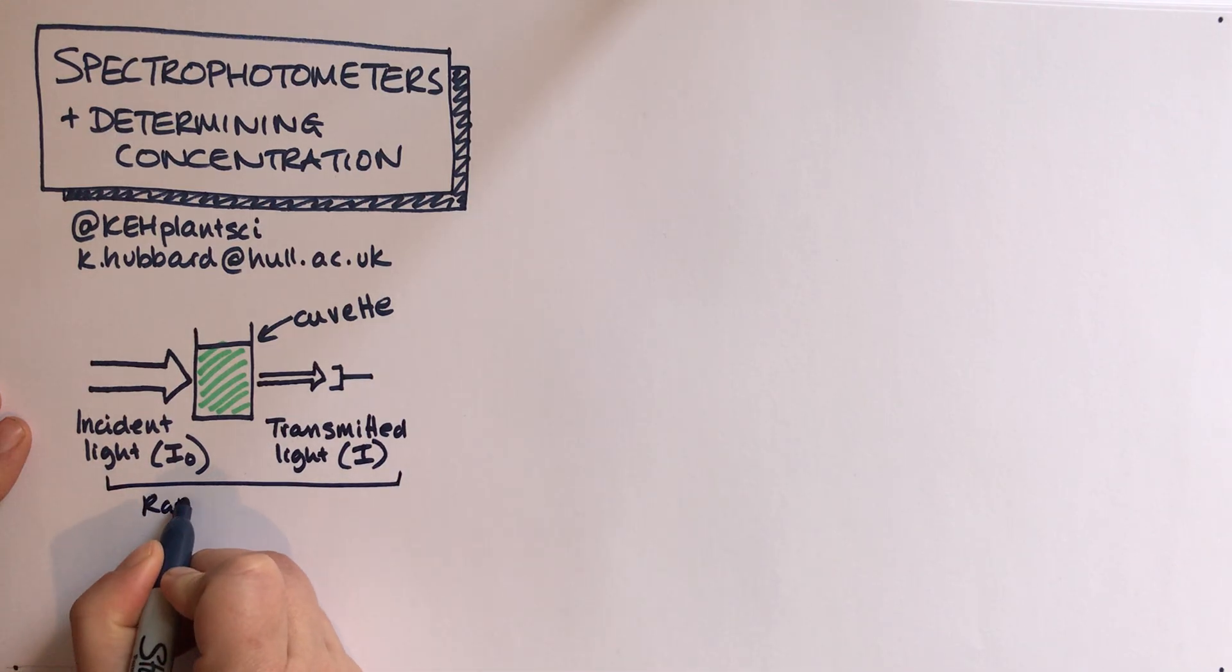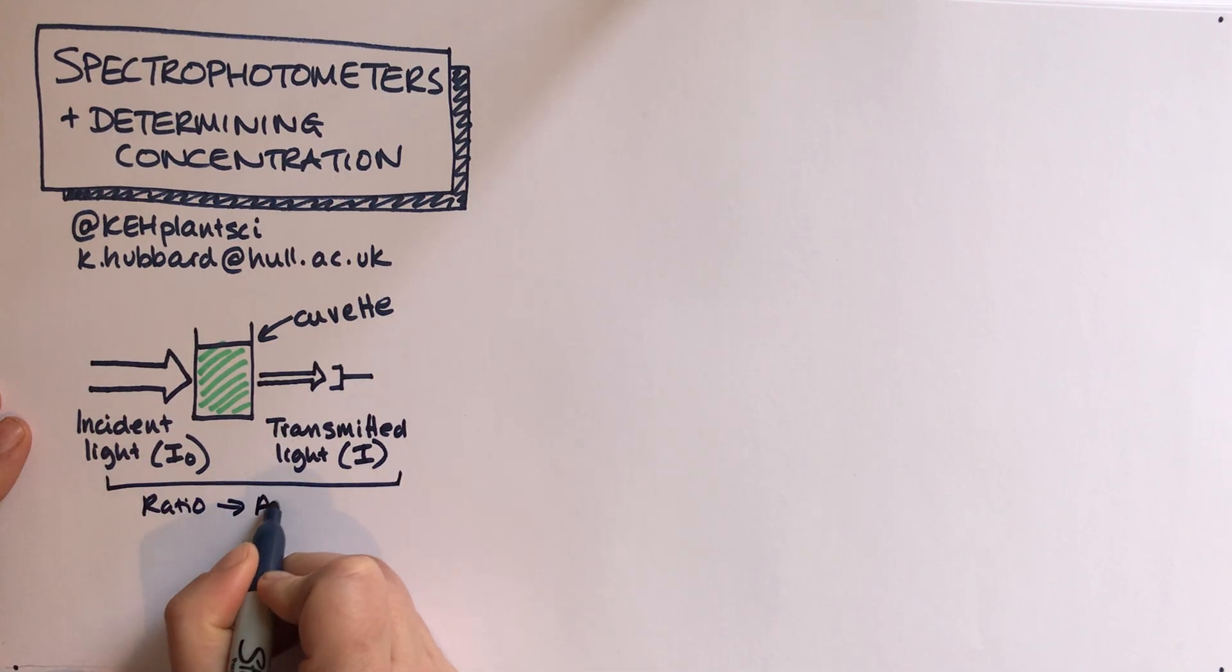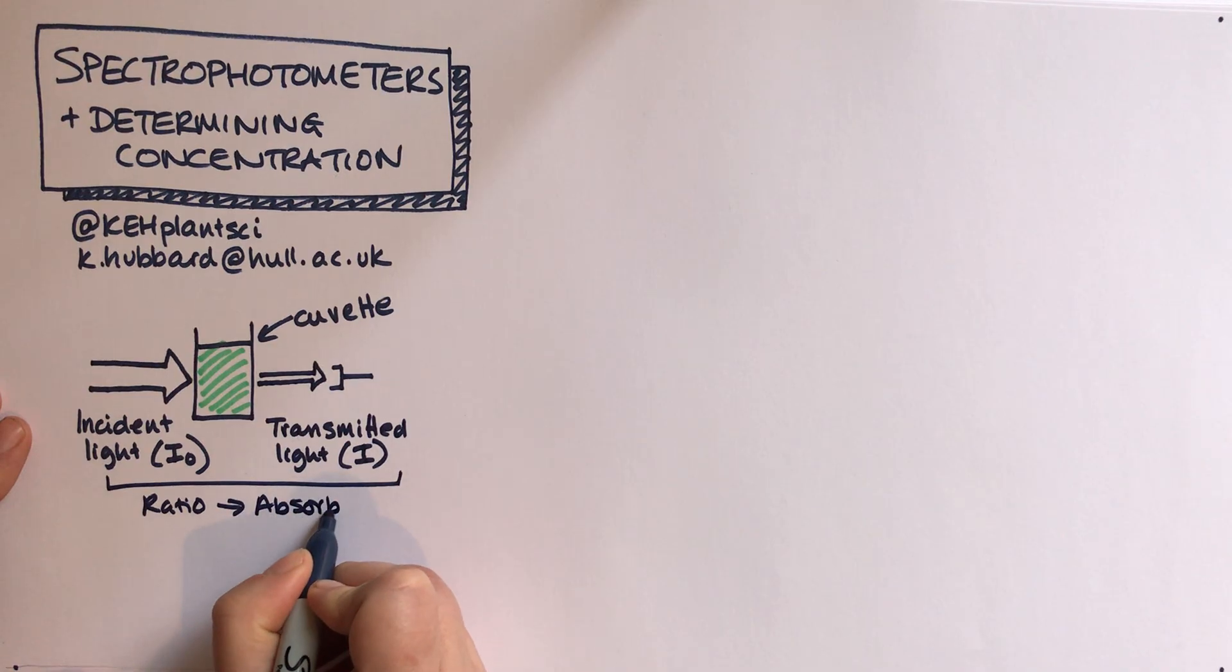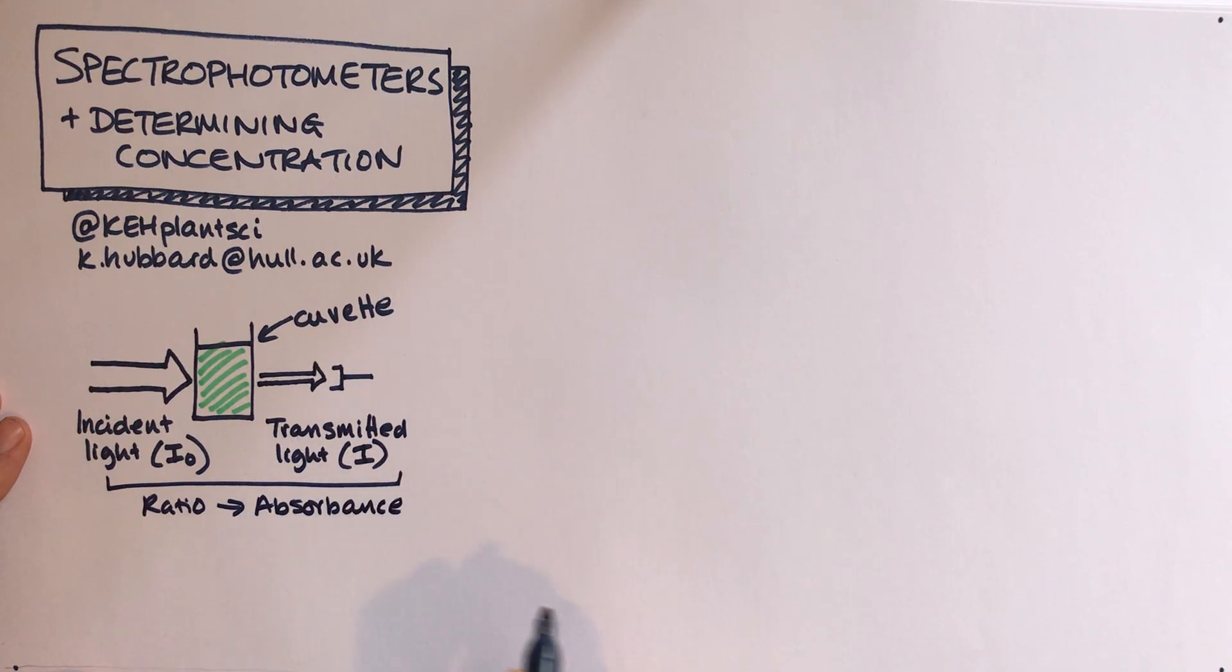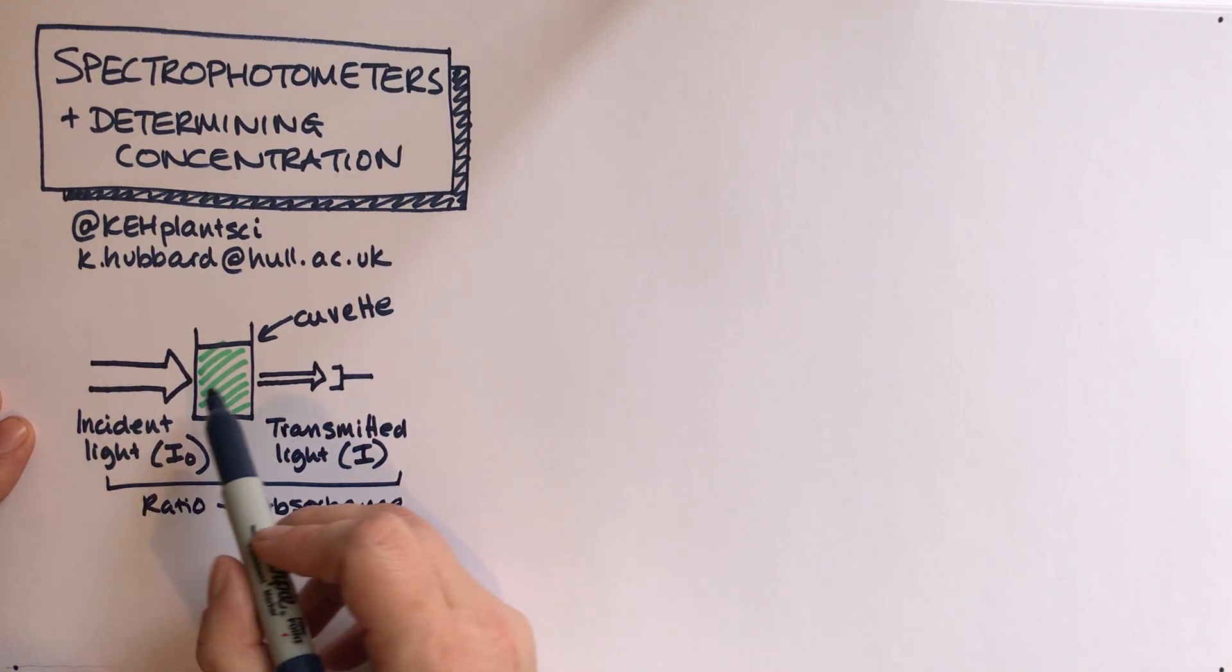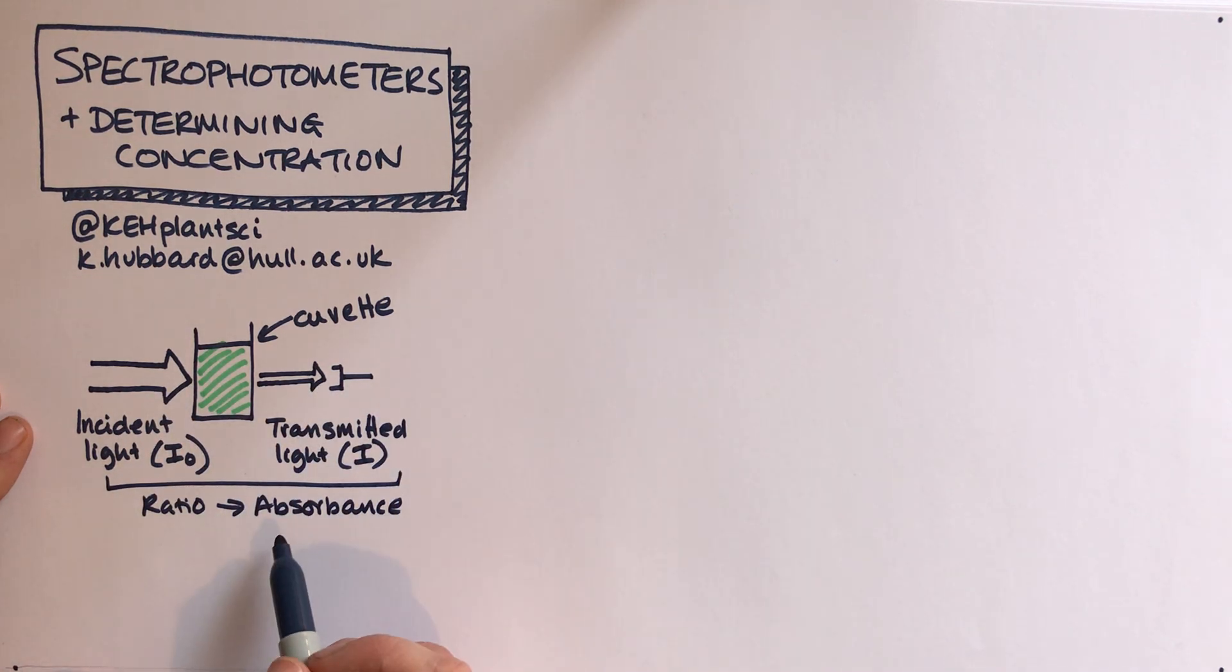We have the incident light going in and then we have the transmitted light which is I. The ratio between those two gives you the absorbance.